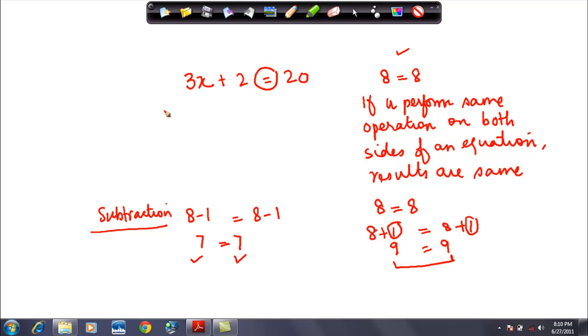So similarly applying this logic here, suppose I subtract two from both the sides. The idea is you have to reduce these number of variables. So if I subtract two here, then this two will get cancelled with this two. What I am left here is only three X and 20 minus two, we all know it is 18.